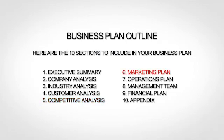The sixth section is your marketing plan, where you lay out your marketing strategy. The seventh section is your operations plan, where you explain how you actually run or will run your business. The eighth section, the management team, is where you provide bios of your team. The ninth section is your financial plan, where you give financial forecasts.